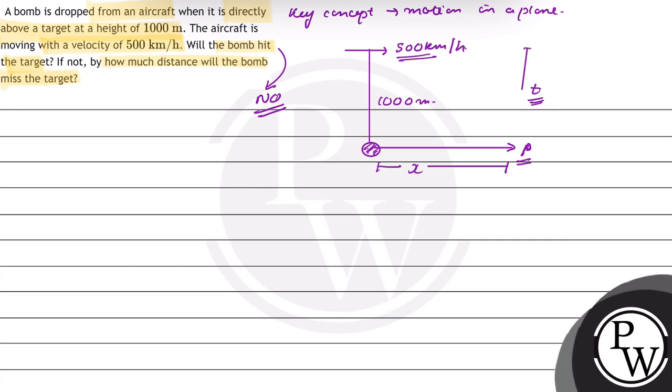Now, moving on to the next part, by how much distance will the bomb miss the target? For this, we have to find out the time in which this vertical distance of 1000 meters is covered. From the second law of motion, s is equal to ut plus half a t square. We know that initially, the vertical direction may co-velocity is 80, so u_y is equal to 0 and acceleration a is equal to 9.8 meters per second square in downward direction.